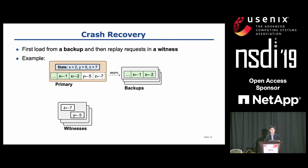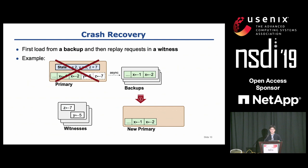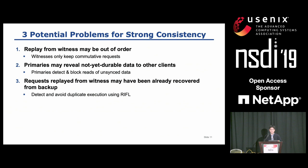Let's see how recovery works in CURP. When a primary node crashes, the new primary first recovers from a backup, and after loading all data in the backup, it replays all operations in the witnesses. The recovery completes by syncing the replayed operations to backups. Relying on witnesses for recovery has three potential dangers to consistency, which I will discuss in the following slides.